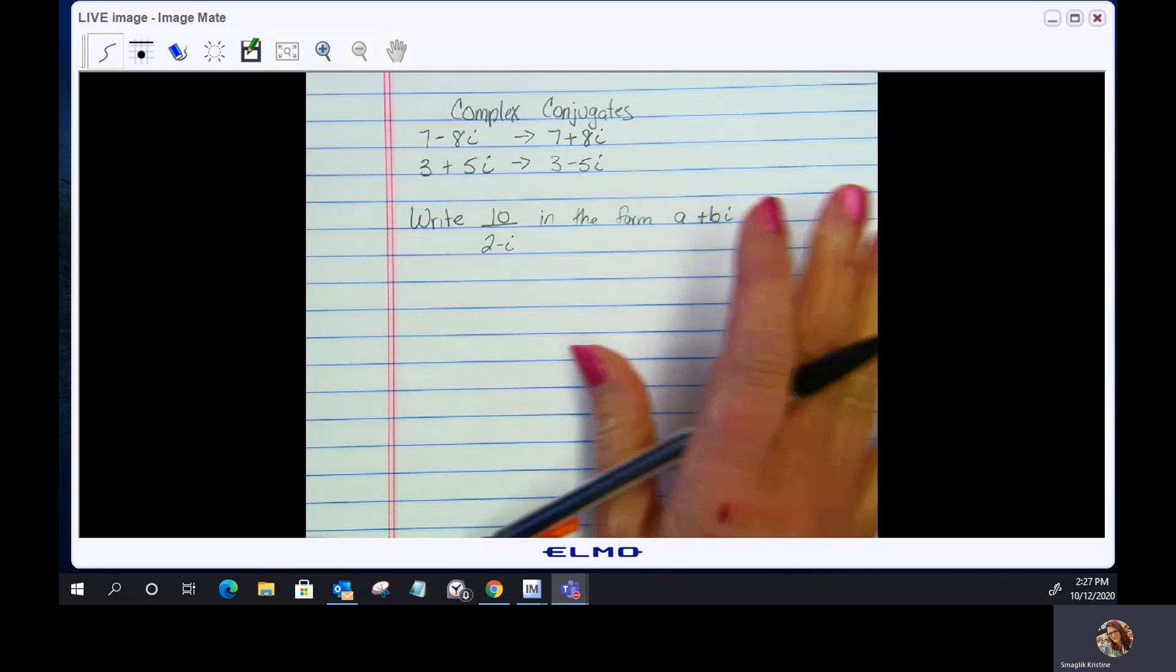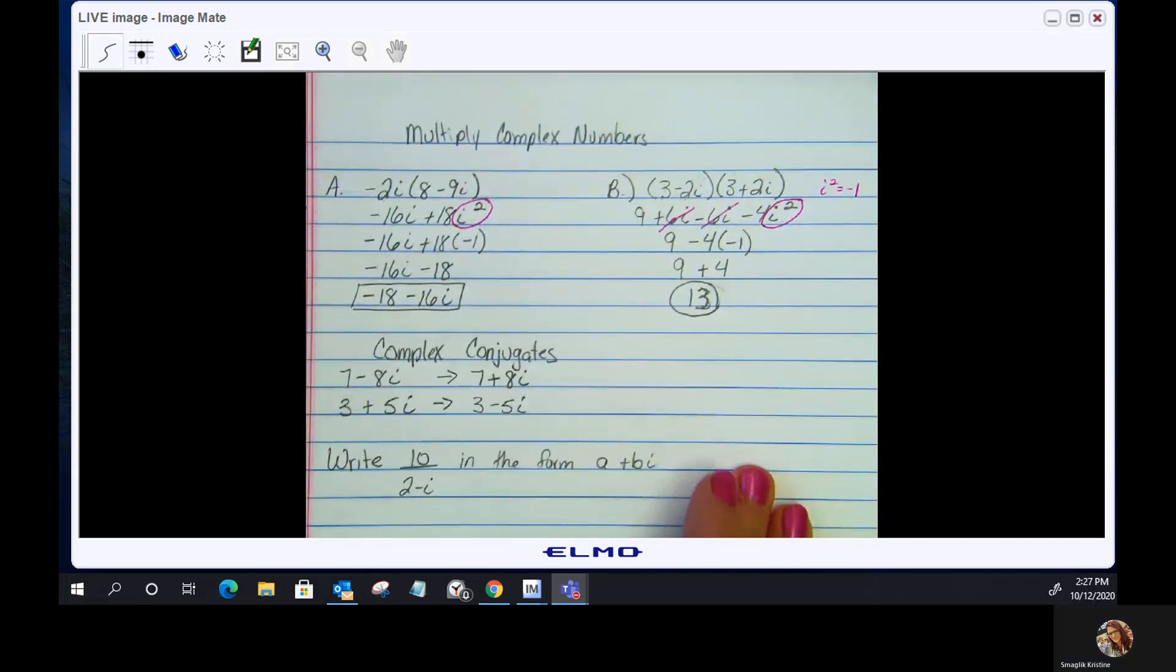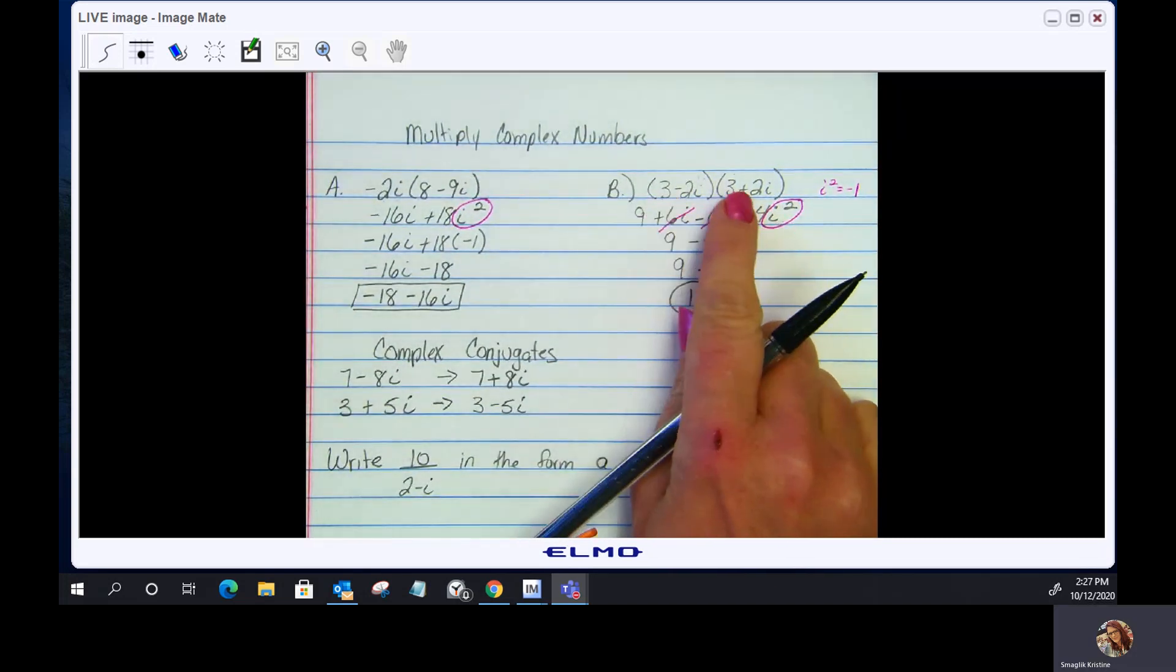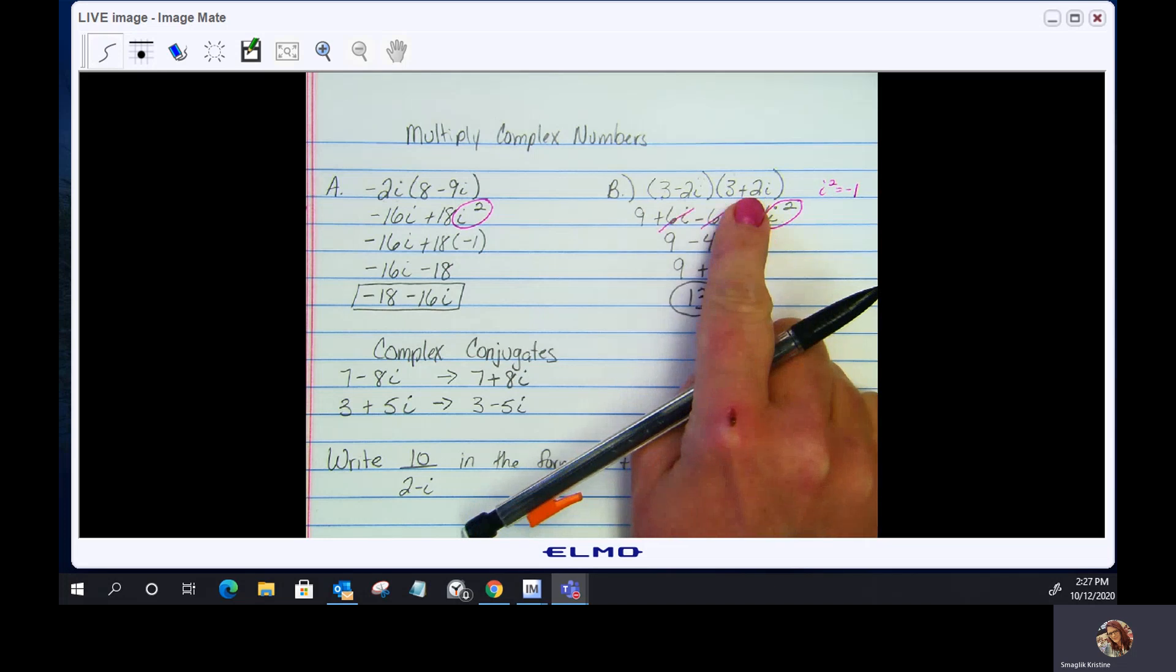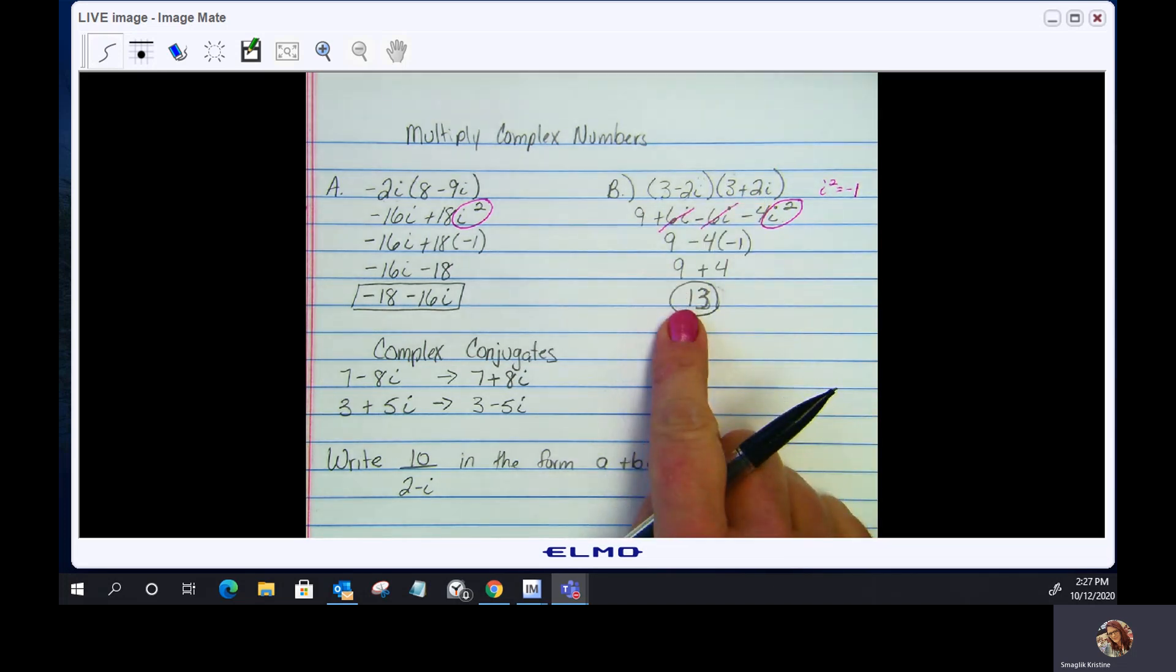Now, if you remember, when we multiplied in this example, 3 plus 2i is the complex conjugate to 3 minus 2i, and when we multiplied them, out came a real number.